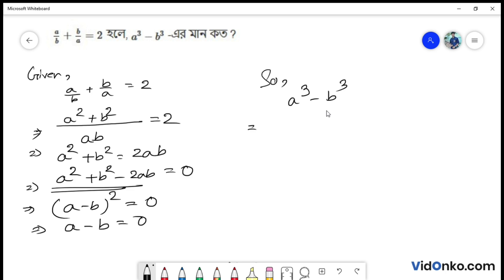What is the formula for a³ minus b³? We know the formula is a minus b into a² plus ab plus b².